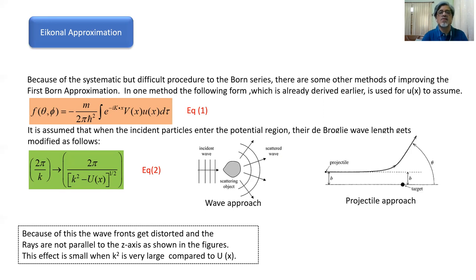In one method, the following form, which was already derived by us earlier, is used for u(x). We have already derived that f(θ,φ) = −m/(2πℏ²) · ∫ e^(−i k⃗·x) u(x) d³x, represented as equation number one. It is assumed that when the incident particle enters the potential region, the de Broglie wavelength gets modified from 2π/k to 2π/(k² − u(x))^(1/2), represented as result 2.